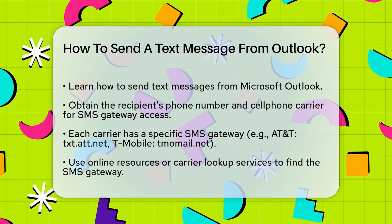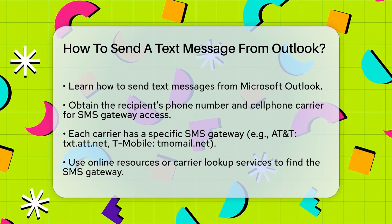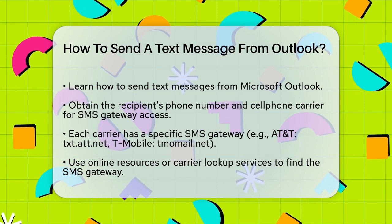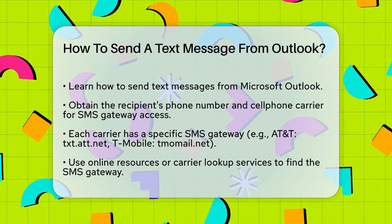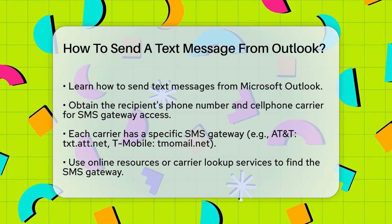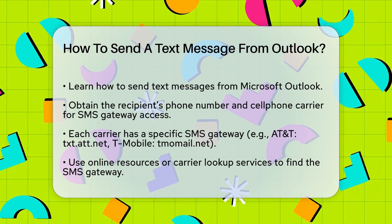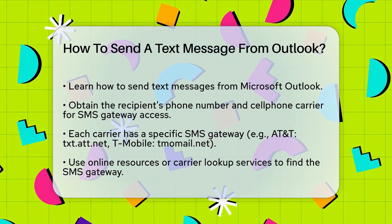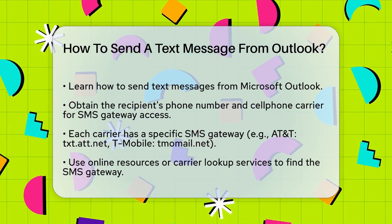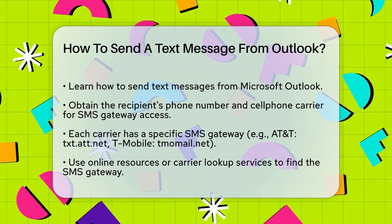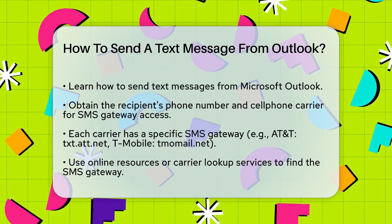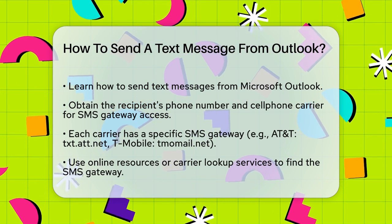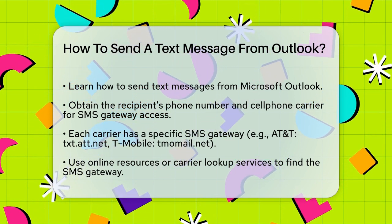First, you need to know the phone number of the person you want to text and their cell phone carrier. This is crucial because each carrier has its own SMS gateway. For example, if the person uses AT&T, the SMS gateway would be txt.att.net, while for T-Mobile it would be tmomail.net. To find the SMS gateway, you can look up the carrier's information online or use a carrier lookup service.